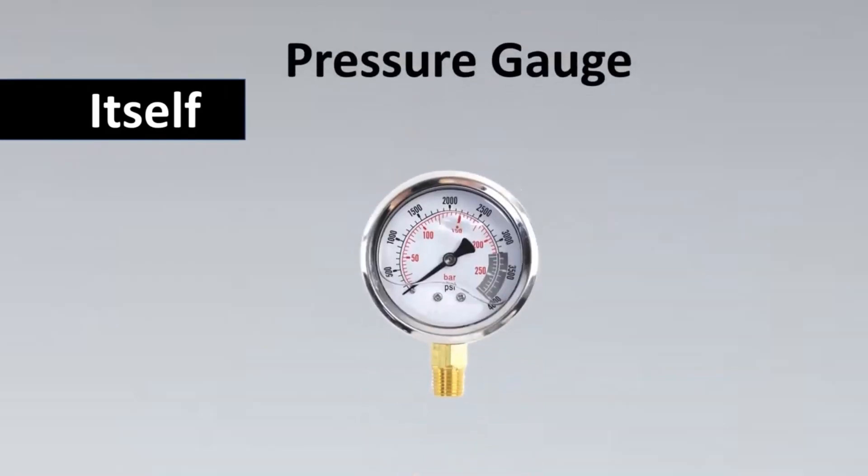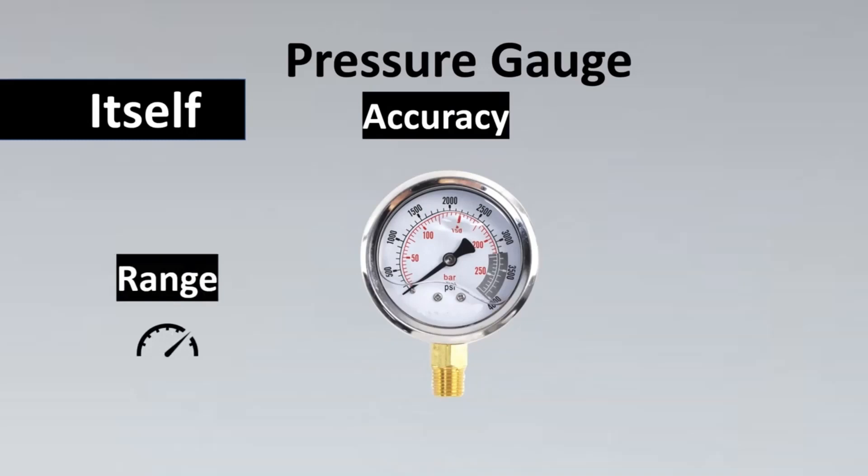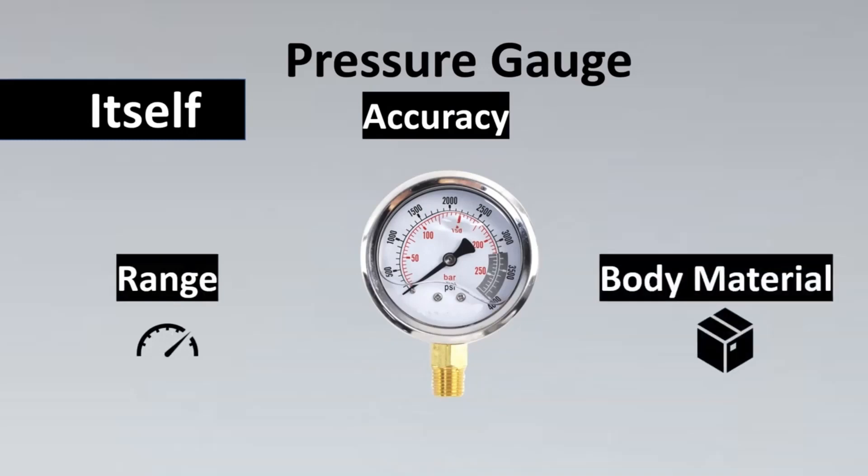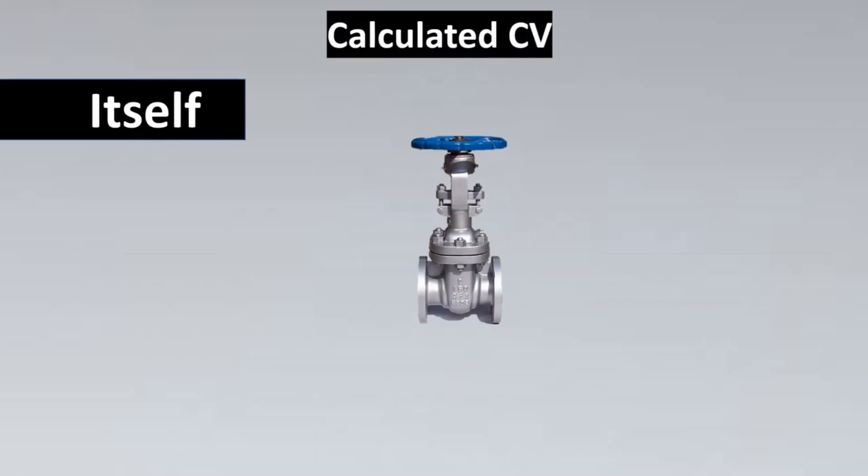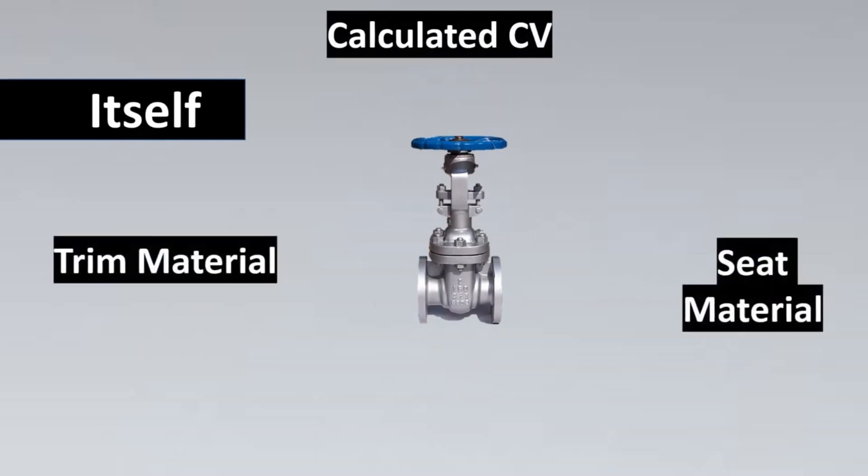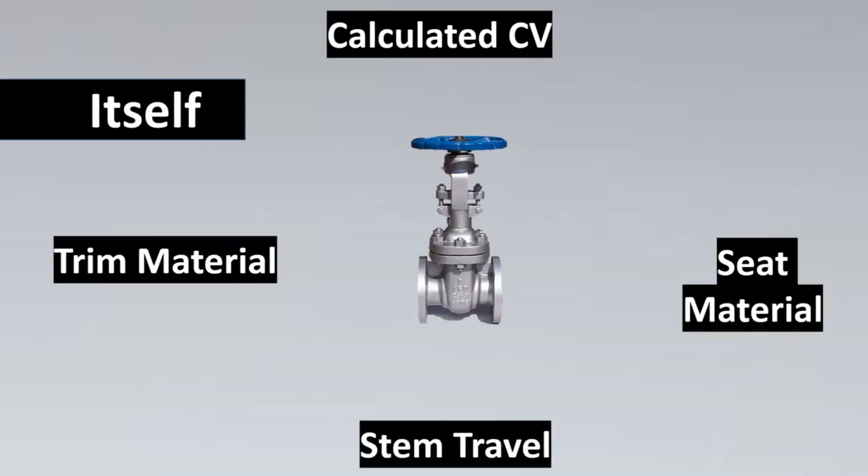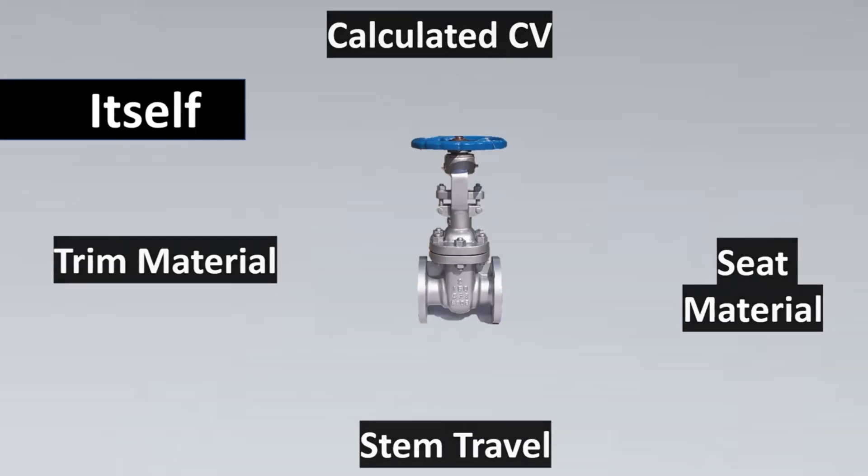This includes the own components of the instrument. Let's take an example of a pressure gauge. Here the accuracy of the instrument, what is the range, what is the body material, and especially what are the end connections—is it threaded connections or flange connections, etc. But this varies. If it's a control valve it could have certain other details like what is the calculated CV, the trim material, seat material, the stem travel, etc. This varies from instrument to instrument, which we will freeze in the form type.